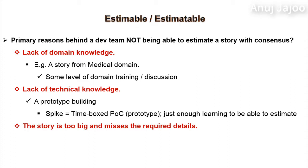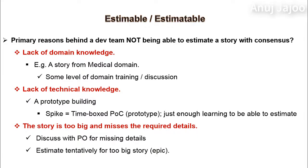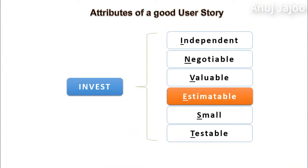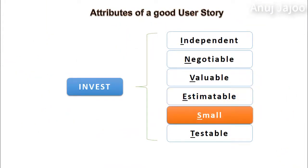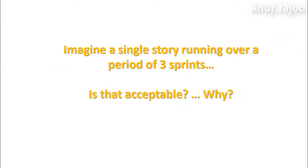Extreme Programming has a concept called Spike for the same purpose. A spike means a time-boxed prototype or proof of concept. For example, the team might decide to experiment for a time-boxed interval of two weeks with a new technology, just enough to be able to estimate the stories. When the story is too big and misses required details, the team needs to have more discussion with the product owner. Even for epics — that is, big stories — the team does a tentative estimate for reference.